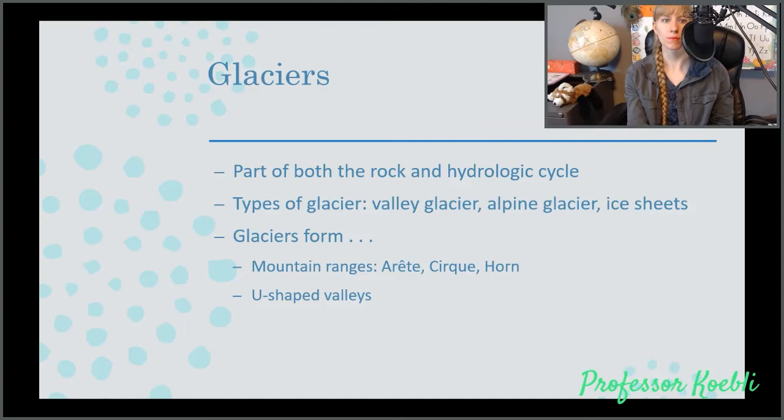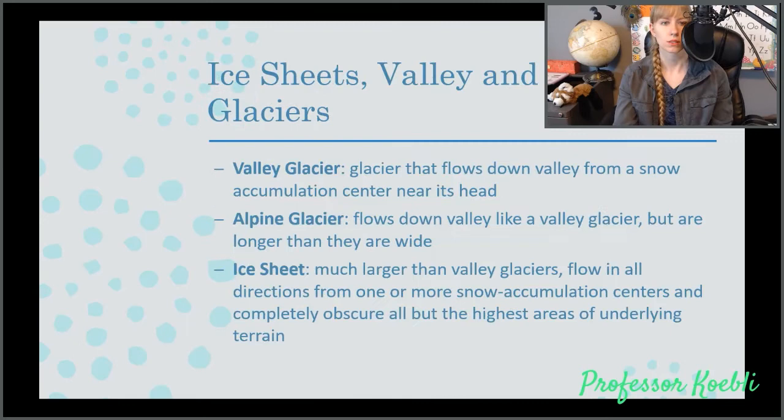Now we're going to move on to glaciers. Glaciers are both part of the rock cycle and the hydraulic cycle. The types of glacier we are going to cover are valley glacier, alpine glacier, and ice sheet. Glaciers form mountain ranges like arêtes, cirques, horns, and U-shaped valleys.